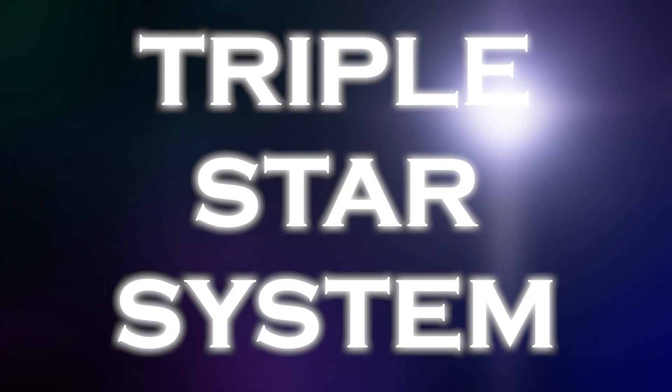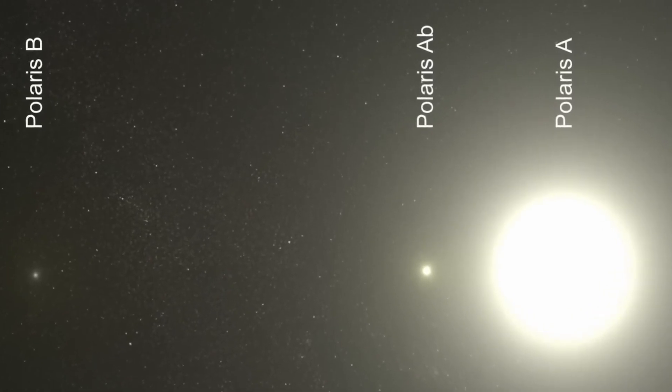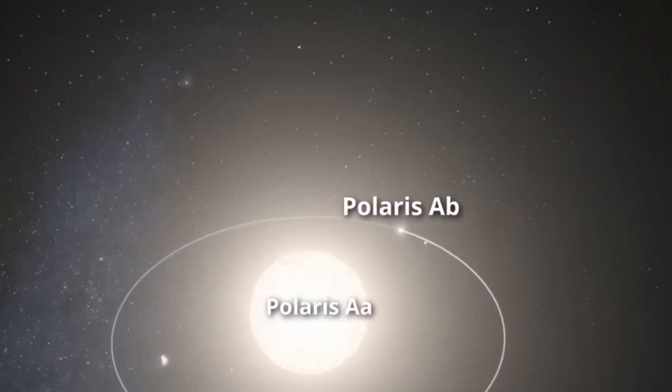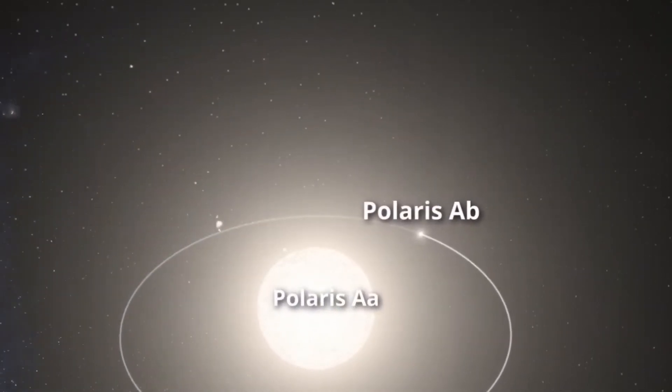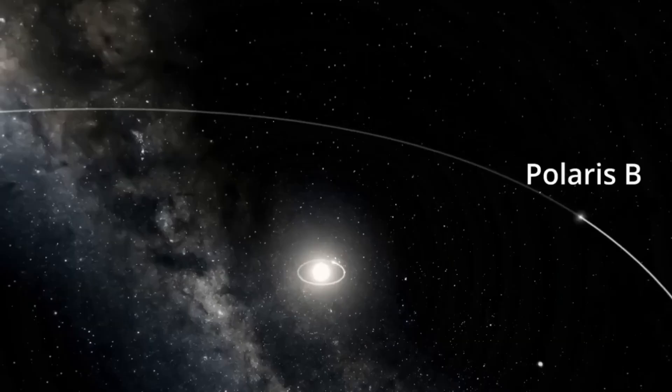Despite its appearance as a lone star, it is actually part of a rather complex triple star system. Within this system, the primary stars are Polaris AA and Polaris AB, which seen with the naked eye, look like a single star.